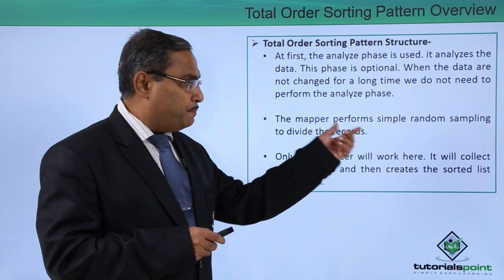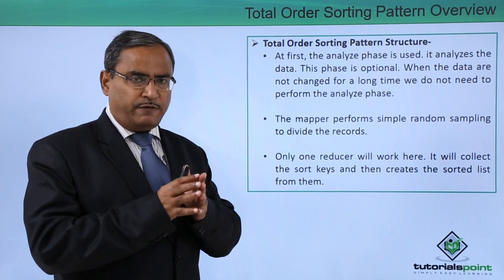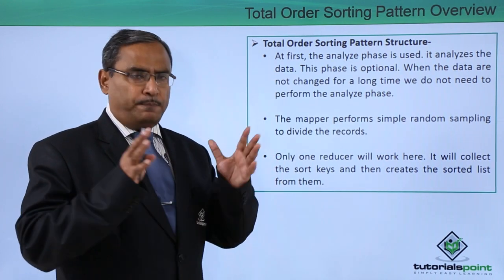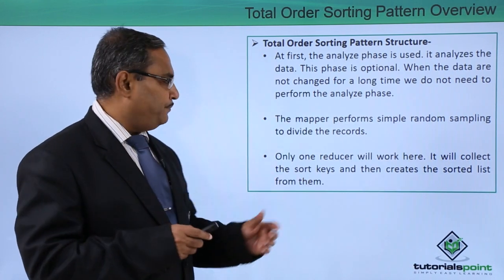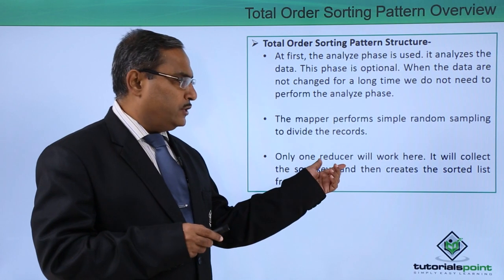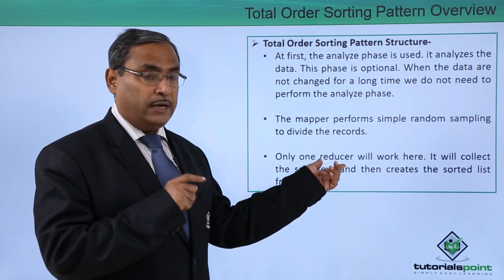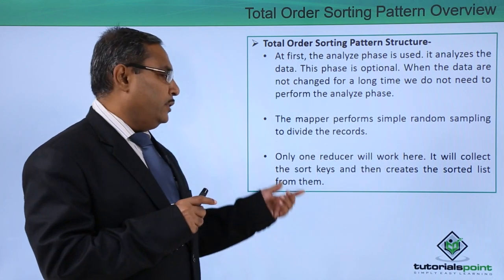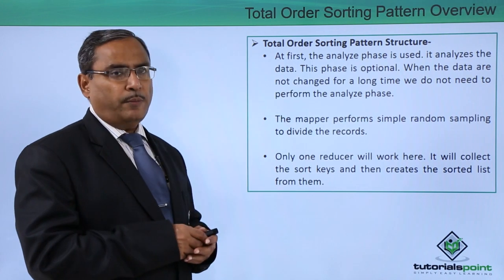The mapper performs simple random sampling to divide the records. Records will be divided into multiple different partitions depending upon some random number generation. Only one reducer will work here. In this particular design pattern we will be having only one reducer but multiple mappers. It will collect the sort keys and then create the sorted list from them.